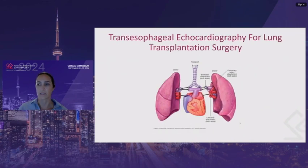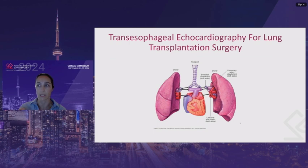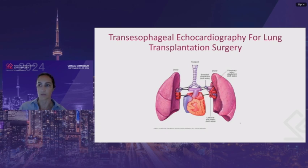Lung transplantation is the definitive treatment for end-stage lung disease. TEE is an important diagnostic and imaging tool during a lung transplantation procedure and in the post-operative period in the ICU. TEE can be used to assess and diagnose causes of hemodynamic instability, hypovolemia, ischemic changes, progressive RV dysfunction, RV failure, and tamponade, especially in the case of hyperinflation and severe COPD.